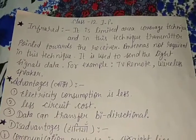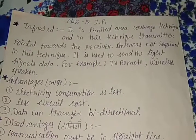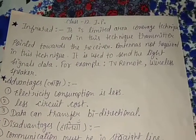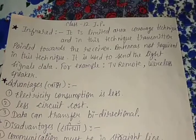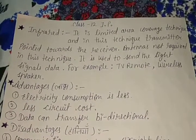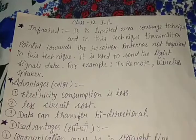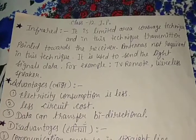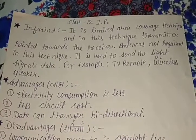Today we are talking about infrared rays. We have already covered 4 types: microwaves, radio waves, satellite, and Bluetooth. Infrared rays is our 5th type of wireless transmission media.